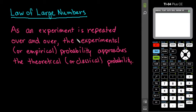Hi, in this video we're going to simulate the law of large numbers. The law of large numbers says that as an experiment is repeated over and over, the experimental or empirical probability approaches the theoretical or classical probability.